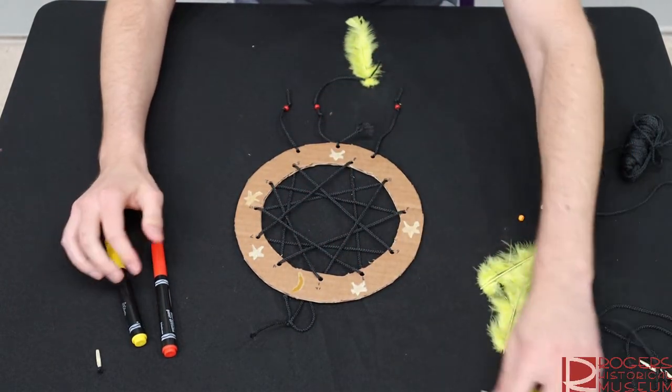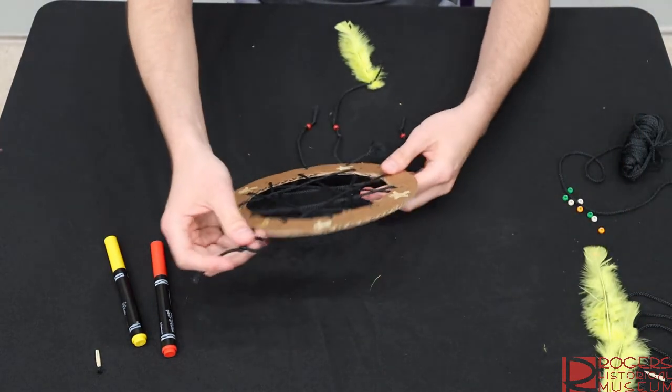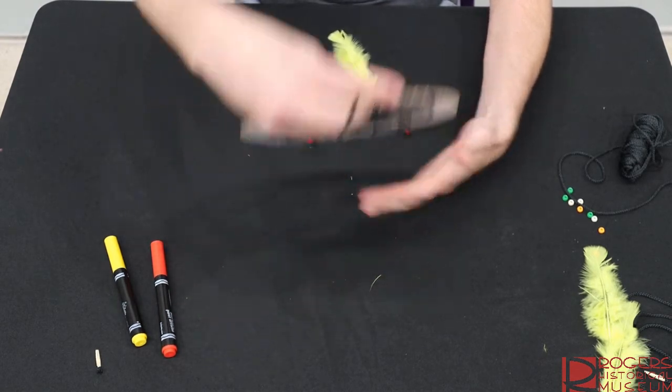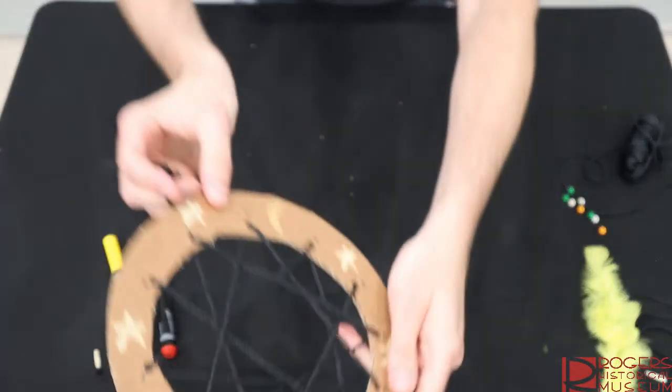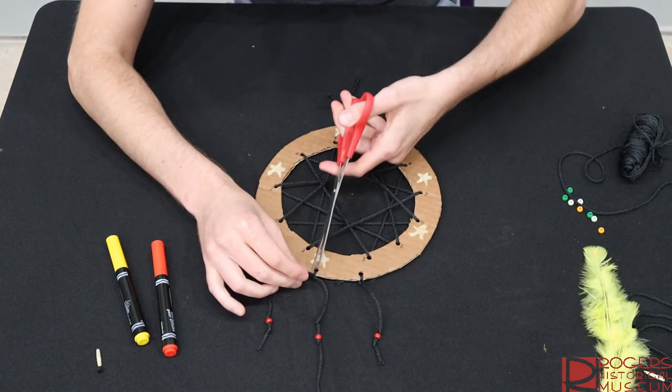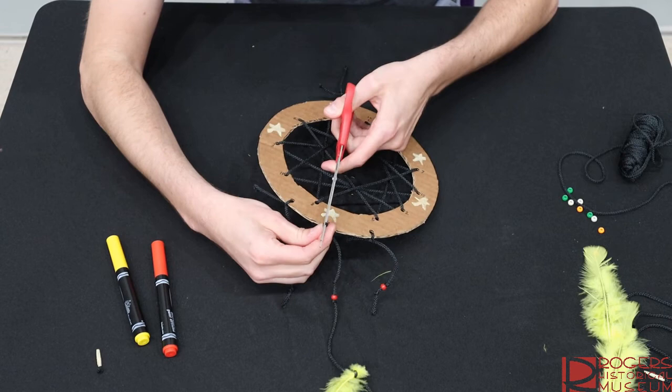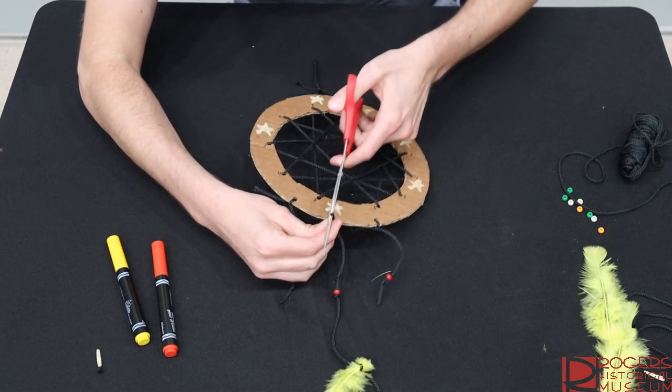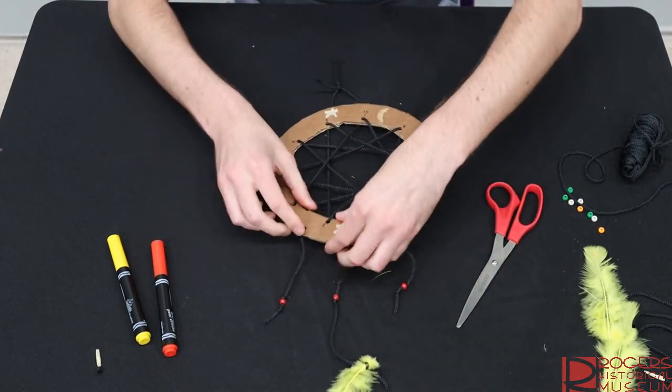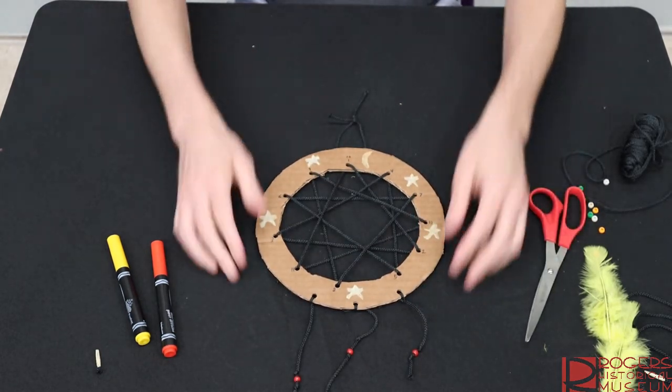So now move some of our stuff, our supplies out of the way. You will have your very own dream catcher that with the hook up on the top, you can hang above your bed or wherever you'd like. We're going to snip off this little extra piece right here. We don't want that one in the way. And there you have your very own dream catcher.